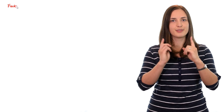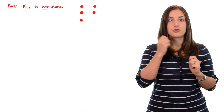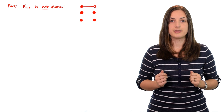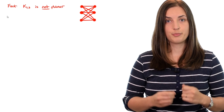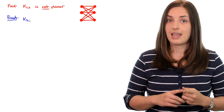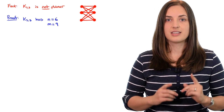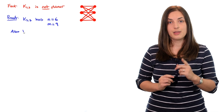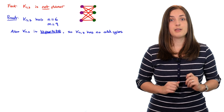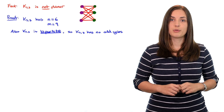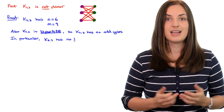We want to use this bound to prove that K3,3 is not planar. K3,3 has two partite sets both with three elements, with every possible edge between one set and the other. K3,3 has six vertices and nine edges. Since K3,3 is bipartite, it has no odd cycles, which means in particular it has no triangles.